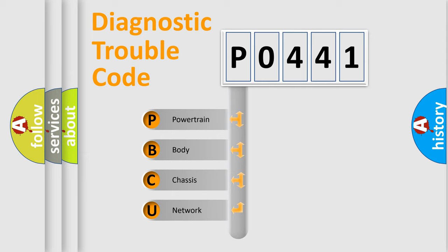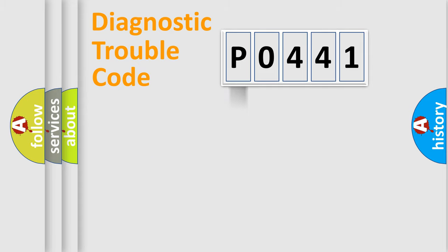We divide the electric system of automobile into the four basic units: powertrain, body, chassis, and network.